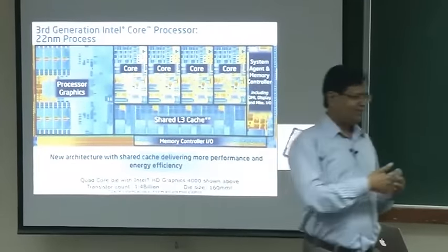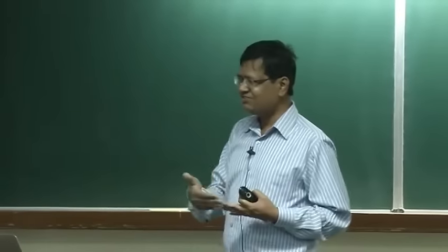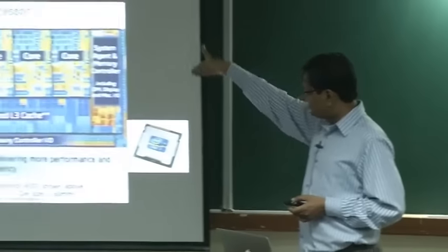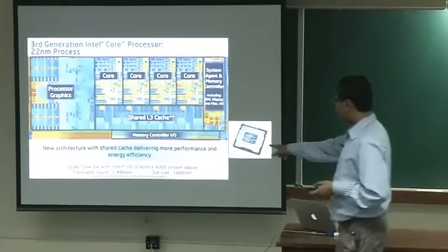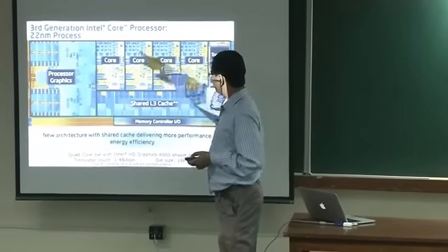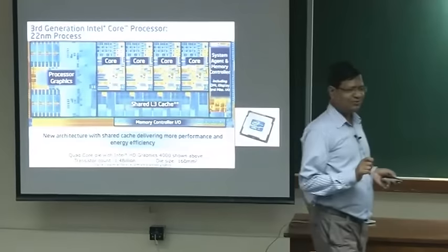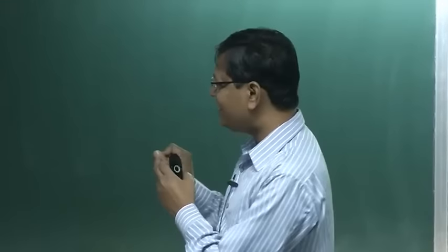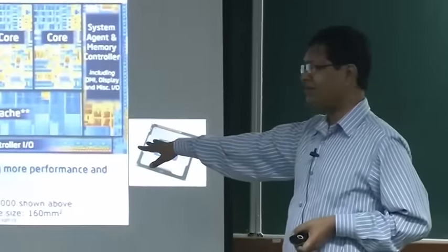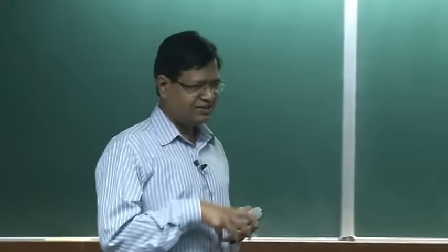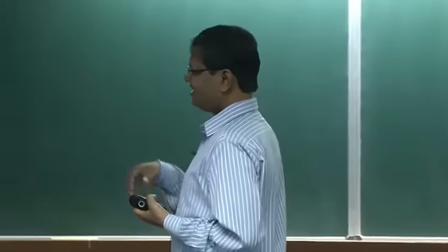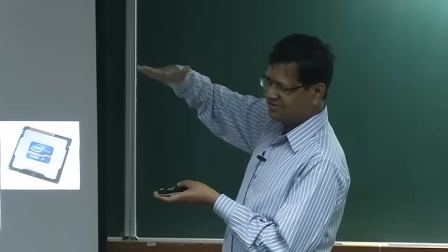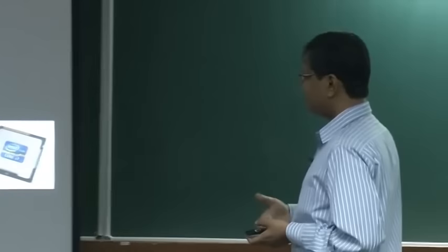It is like a grocery store — if it is close to your home you can get things fast; if it is far away it takes longer. You bring storage closer and closer and put more in cache. The die size is 160 square millimeters — roughly 13 cm by 13 cm. How many transistors are sitting there? 1.48 billion transistors packed in that unit. It is amazing that we could reach this kind of complexity. This is in a single layer; the idea is to put more layers and connect them — that is another direction people are working on.